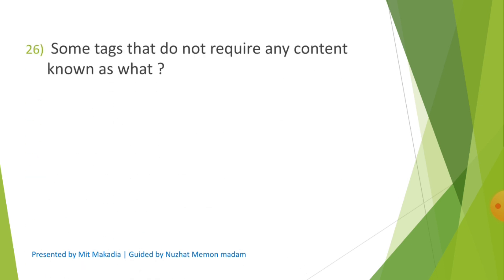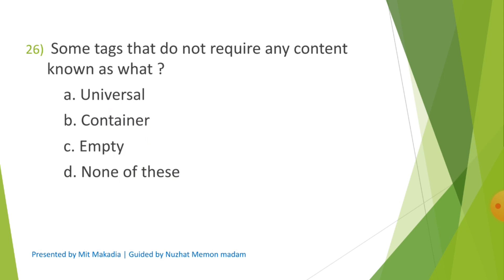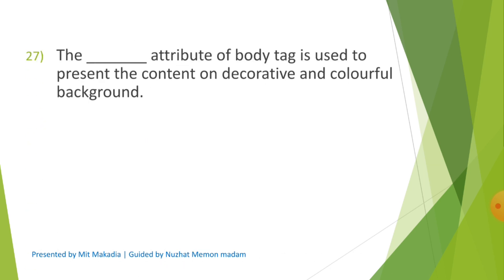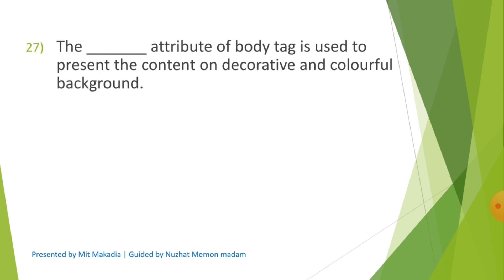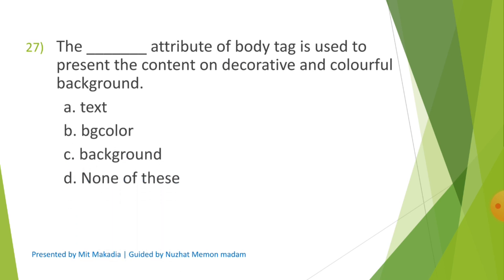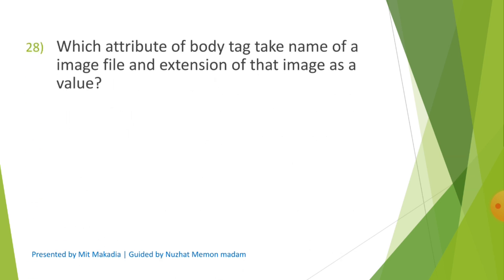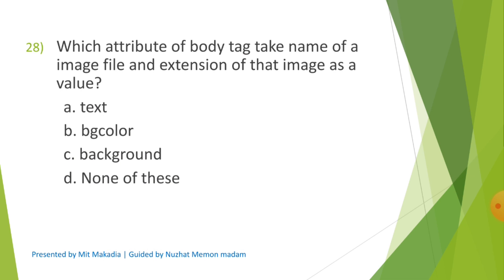Question 26: Some tags that do not require any content are known as what? Options are A) Universal, B) Container, C) Empty, D) None of these. The correct answer is C) Empty. Question 27: The dash attribute of the body tag is used to present content on a decorative and colorful background. Options are A) Text, B) BG Color, C) Background, D) None of these. The correct answer is C) Background. Question 28: Which attribute of the body tag takes the name of an image file and extension of that image as a value? Options are A) Text, B) BG Color, C) Background, D) None of these. The correct answer is C) Background.